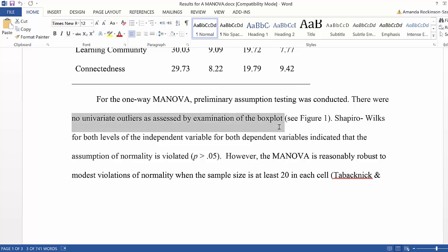So here I wrote, there were no univariate outliers as assessed by examination of the box plot. And at the end of the report, I would put a figure that demonstrated the box plots.